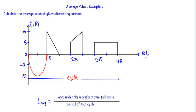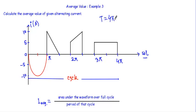In this video I will show you another example of average value — this will be the last example. Calculate the average value of the given alternating current. On the y-axis I am taking the current, the value of current changing with time, so this will be an alternating current. On the x-axis we will take ωt, and the cycle of this waveform is within 0 to 4π, so the waveform will have a period T equal to 4π.